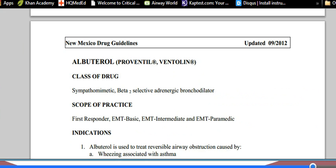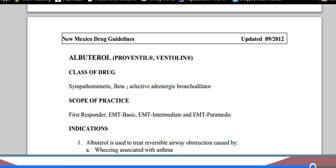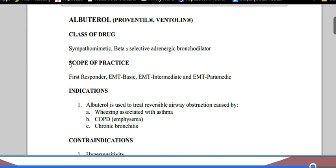And this is actually taken from the New Mexico EMS.org website because I want everybody to see this. This is the drug guidelines. And these have been changed since 2012. So we have albuterol. The class of the drug is sympathomimetic. Remember, we went over that earlier. Beta-2 selective adrenergic bronchodilator.